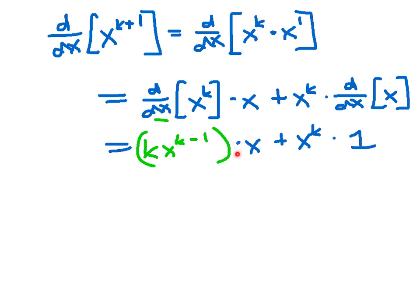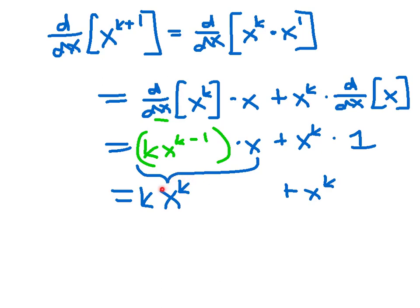Working through the algebra: on the left term we have k·x^(k−1) · x, and combining those two x factors gives k·x^k. Then we have plus 1·x^k, which is just x^k. Now we notice we have a factor of x^k in both terms, so we factor it out to get (k+1)·x^k. That's exactly what we wanted to show — that the derivative of x^(k+1) is (k+1)·x^k. All these steps are justified by algebra, the product rule, the inductive hypothesis, and our known derivative of x.